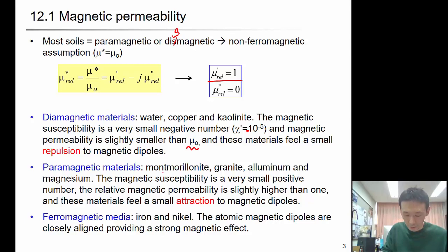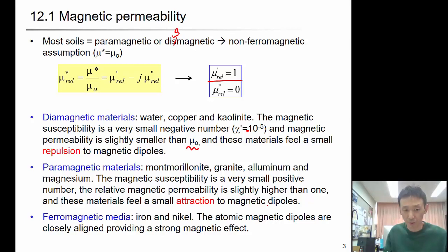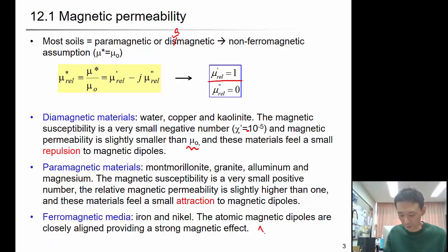Paramagnetic materials include montmorillonite, granite, aluminum, and magnesium. The magnetic susceptibility is a very small positive number, like 10 to the negative 5. The relative magnetic permeability is slightly higher than 1, and these materials feel a small attraction to magnetic dipoles. Ferromagnetic materials — the representative ones are iron and nickel — have atomic magnetic dipoles that are closely aligned, providing a strong magnetic effect, and the susceptibility value will be on the order of 1,000 to 10,000.